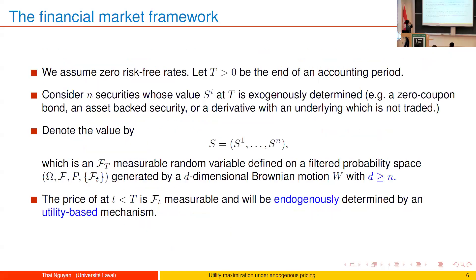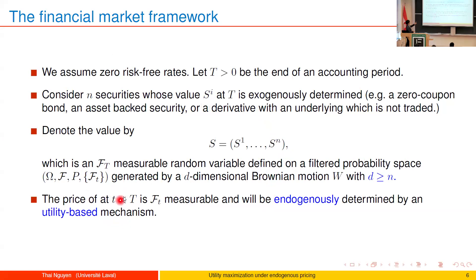Let me briefly show you the setting. We have n securities whose value at terminal time T is given. However, the price at intermediate times is not given — it will be endogenously determined by a utility-based mechanism. That is where we try to capture the price impact caused by trading activities.